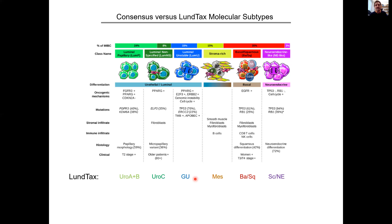We were very happy with the consensus project as it created an important central reference point for molecular classification. The six consensus groups were ones we recognized — their alterations, mechanisms, and gene expression signatures overlapped very well with the Lund taxonomy, essentially one-to-one, with two notable exceptions. The stroma-rich consensus subtype does not exist in the Lund taxonomy because our classifier identifies the subtype of the cancer cells themselves, independent of stromal content. The stroma-rich group in consensus maps to various Lund subtypes plus the mesenchymal-like cases, which truly require immunostaining to distinguish.